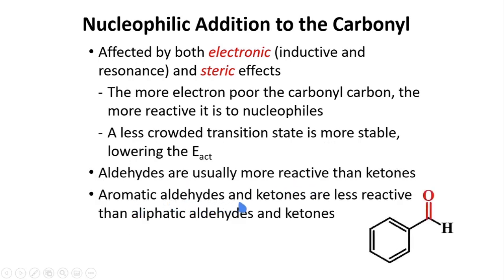Aromatic aldehydes and ketones are less reactive than aliphatic aldehydes and ketones. The aliphatic aldehydes are those aldehydes which have alkyl groups. The reason for this is because the phenyl ring is a good electron donating group, and it can effectively reduce the intensity of the positive charge at the carbonyl carbon.